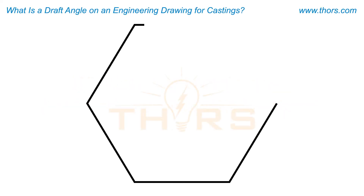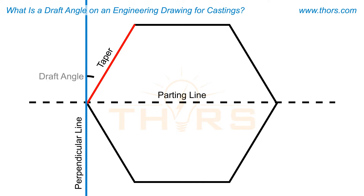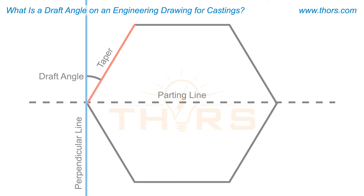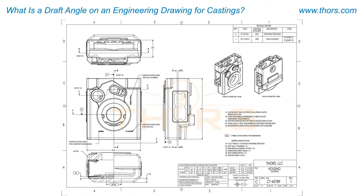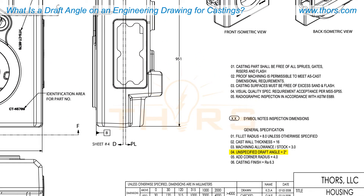The draft for a casting is the taper starting from the parting line. The actual angle formed between the taper and a line perpendicular to the parting line is the draft angle. The draft angle is listed in the notes on a drawing. An unspecified draft angle means that the drawing does not specify a draft angle anywhere else — this is the draft angle that can be used.